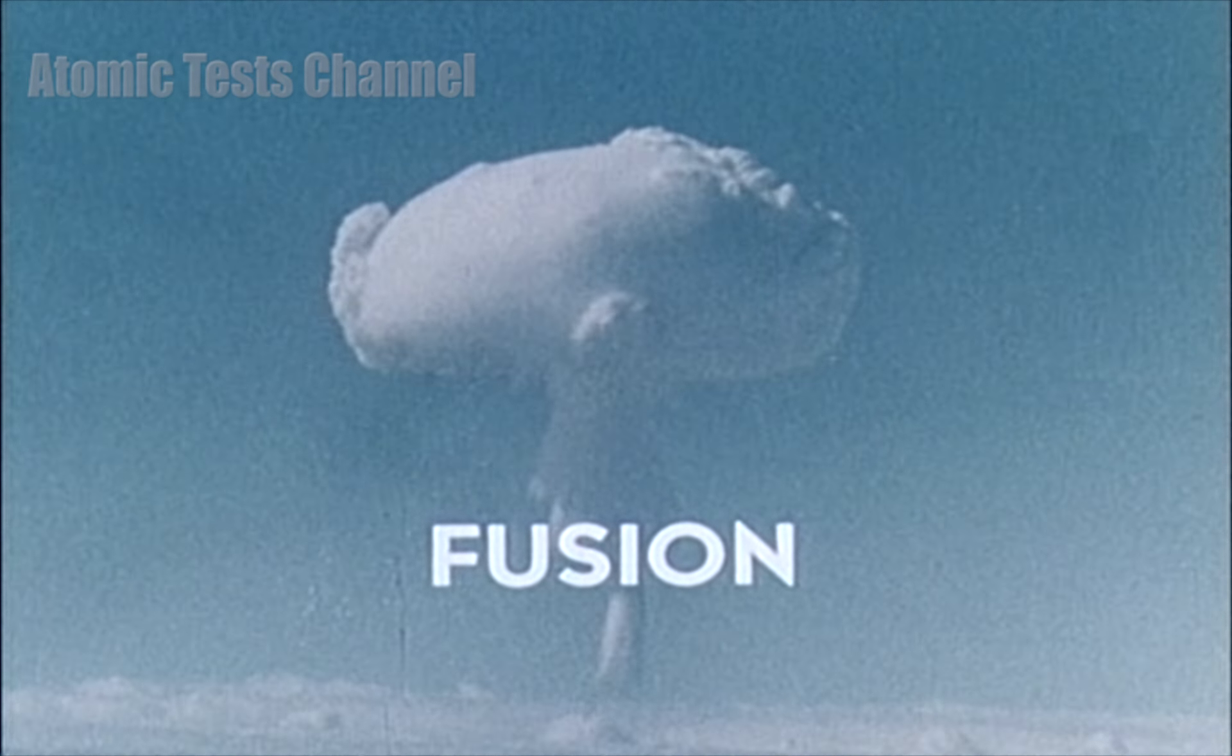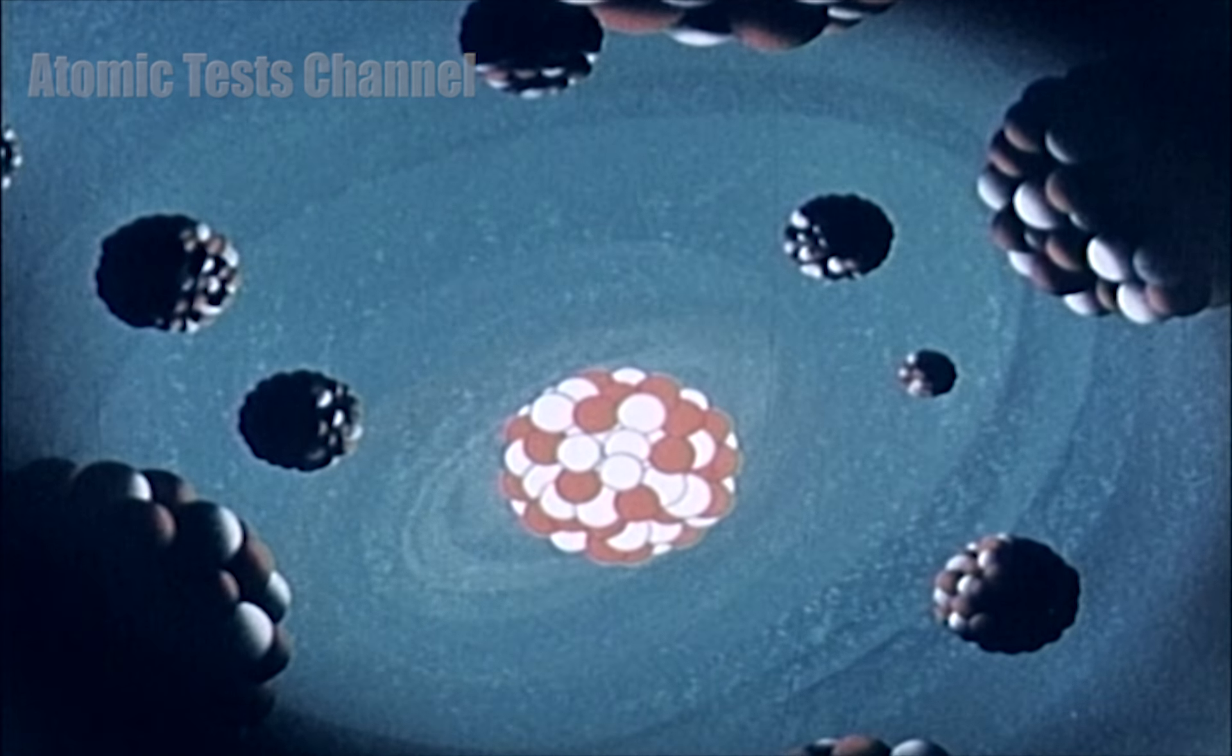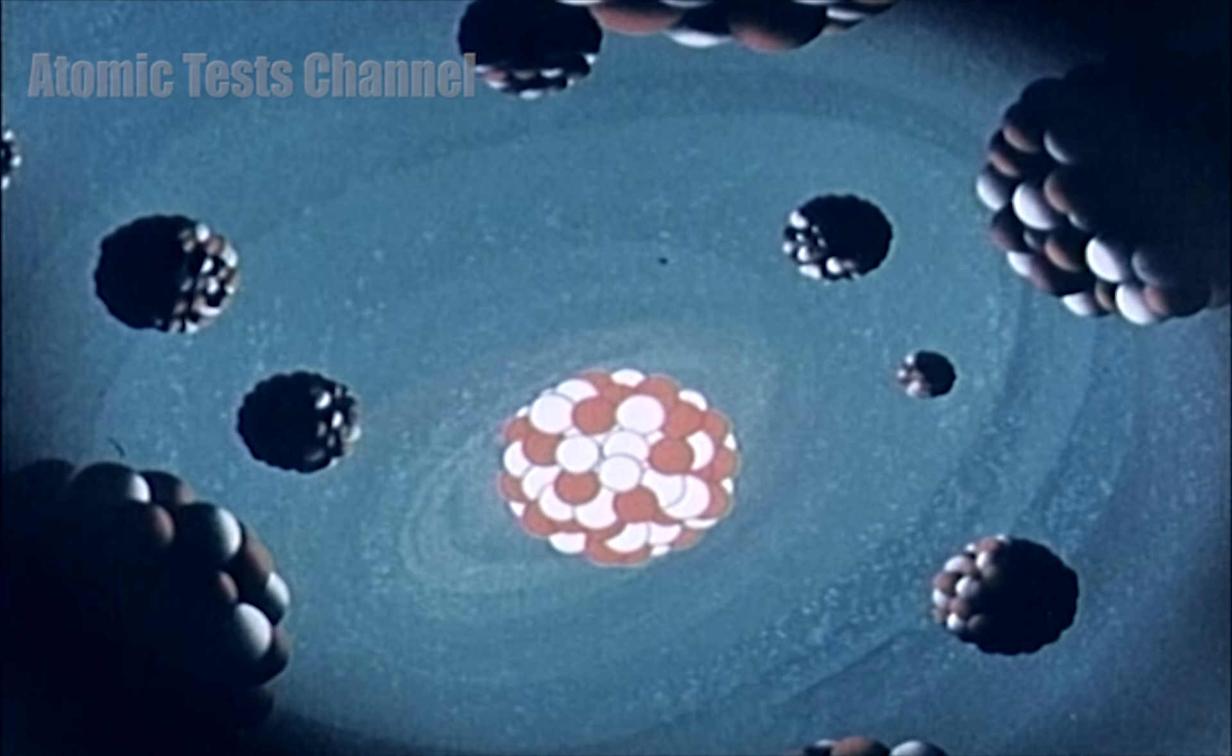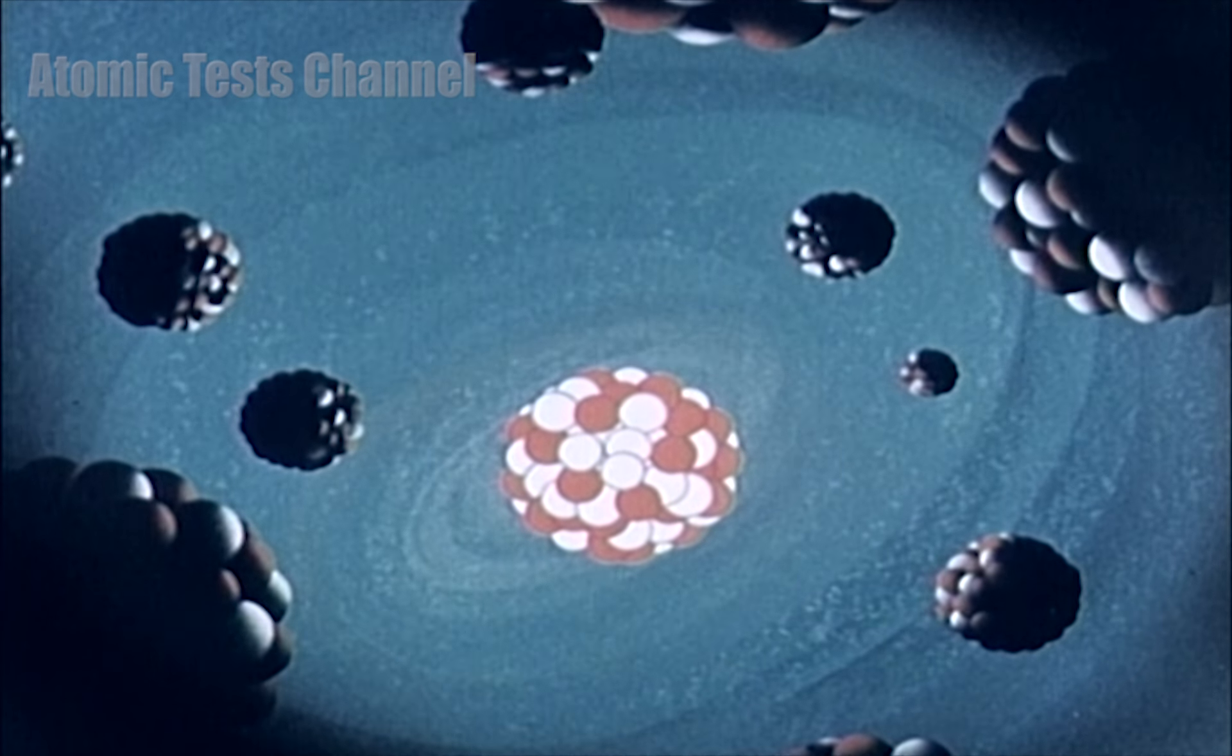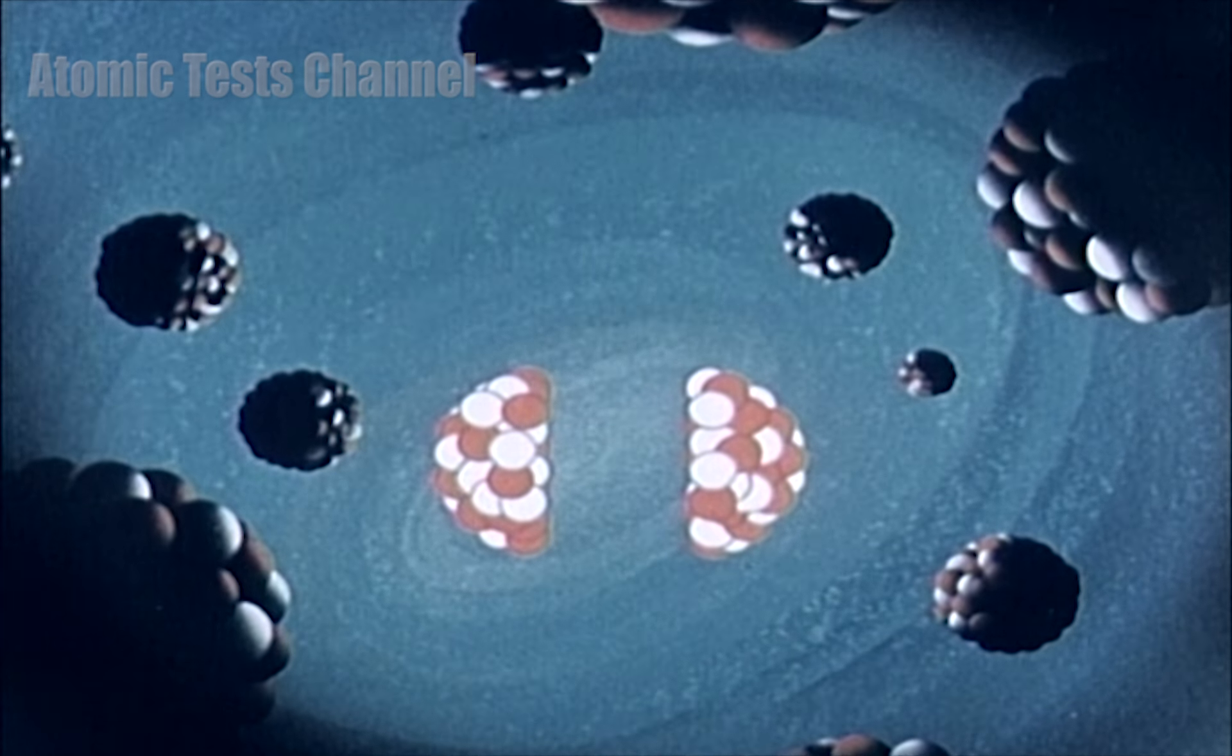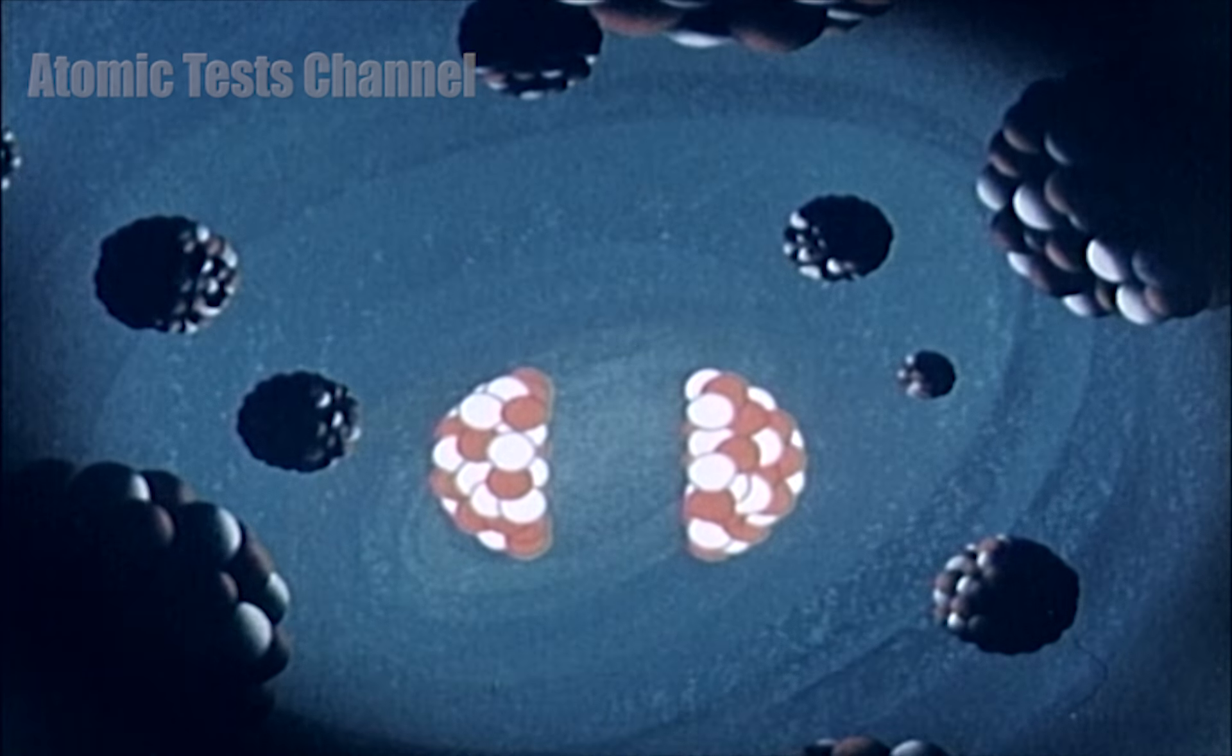One is fission, and the other is fusion. First, let us consider the principles of nuclear fission. When the nucleus of an atom of a fissionable element such as uranium-235 or plutonium-239 is struck by a neutron, the atom splits, or fissions, into two or more parts.